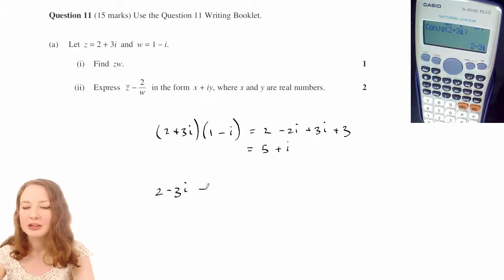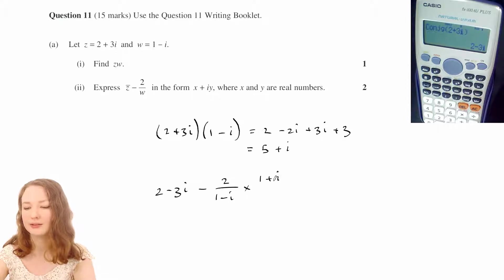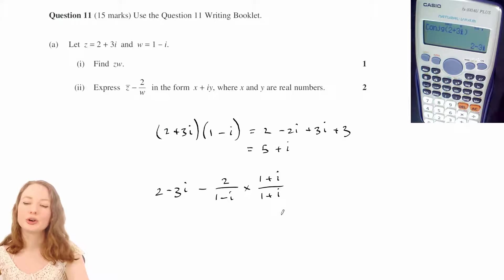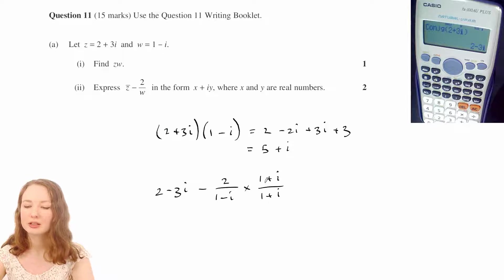Okay, so we've got z̄ minus 2 over w, and the way that you would work that out manually is you'd multiply top and bottom by the conjugate of 1 plus i, which is 1 minus i, because that's going to give us a real number on the denominator. It's a bit like rationalizing the denominator, you want to multiply it by something that's going to give you a nicer denominator.